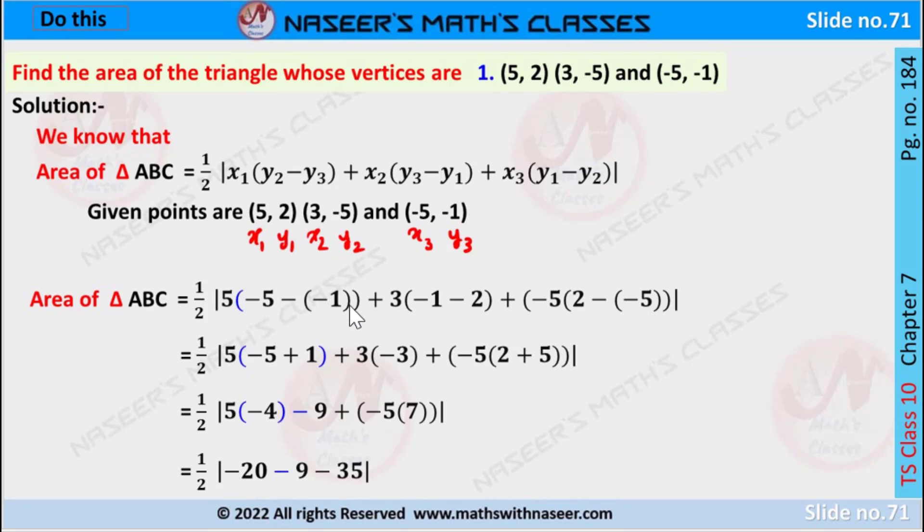Here minus into minus gives plus, then we can write it as plus 1. Here -1 - 2, by simplifying we get -3. Here minus into minus gives plus, then we can write it as 2 + 5.